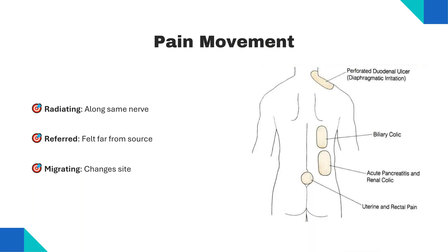Pain can radiate — travelling along the same nerve, as in acute pancreatitis where epigastric pain radiates to the back. It can also be referred, felt far from the source due to shared nerve pathways, as seen in peptic or duodenal ulcers; referred pain can be felt at the tip of the shoulder due to diaphragmatic irritation. Pain can also migrate, changing its location entirely — a classic example being appendicitis.